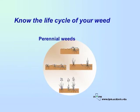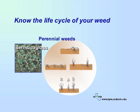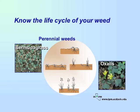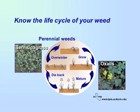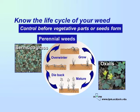Perennial weeds are much harder to manage than annual weeds. Perennial weeds, such as Bermuda grass or oxalis, live for more than one season. Plants grow from seeds or vegetative plant parts during part of the year, mature, and then die back when the weather changes. The underground plant parts can overwinter and form new plants the following season. Perennial weeds are hard to control because they can produce seeds and also spread by tubers, underground roots, or other vegetative parts such as stolons and rhizomes.